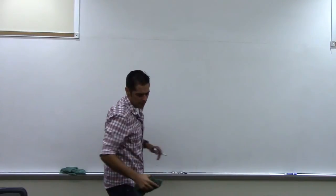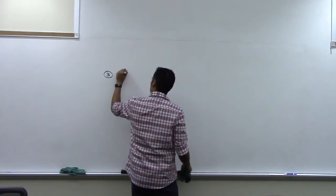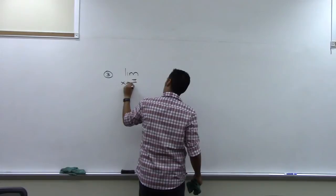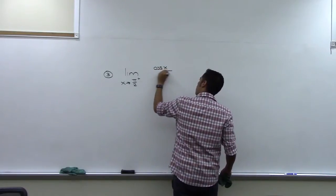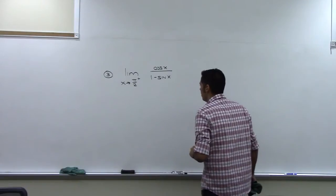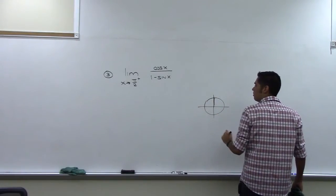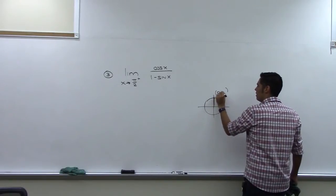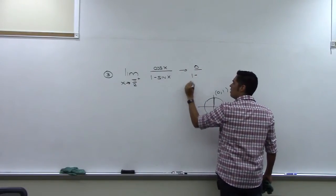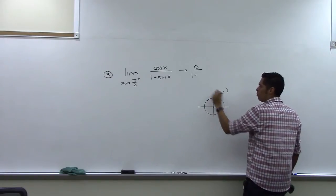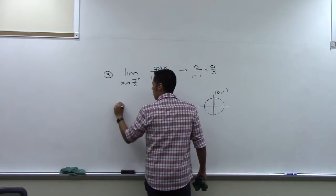Number 3: the limit as x goes to π/2 from the right of cosine x over 1 minus sine x. Cosine of π/2 is the x-coordinate at that angle, which is 0. Then 1 minus sine of π/2 is 1 minus 1, which is 0. So we have 0 over 0 — we have what we need to apply L'Hopital's Rule.